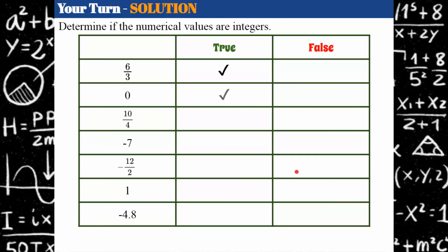10 fourths will never simplify to an integer — 10 fourths could be written as 2 and 1 half or 2.5, but that is not an integer; we have a part of a whole along with the 2. Negative 7 is an integer. Negative 12 over 2 is equivalent to negative 6 — 12 divided by 2 is 6, so negative 6 is an integer. 1 is an integer. And negative 4.8 is false, because negative 4.8 cannot be written as a whole number or its opposite.